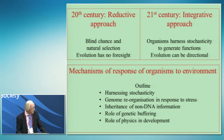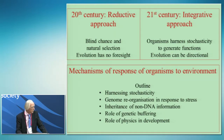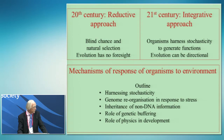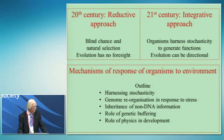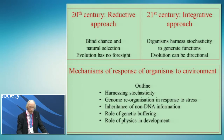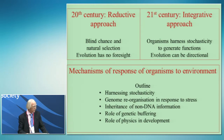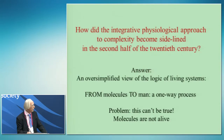I'll first discuss ways in which organisms harness stochasticity. Second, how, in so doing, they're capable of reorganizing genomes in response to stress. Then, the inheritance of non-DNA information — which was what Conrad Waddington showed many years ago — the role of what I call genetic buffering, which is my own group's way into this particular story. Finally, the role of physics in development. The main question is: how did the integrative physiological approach become sidelined in the 20th century?